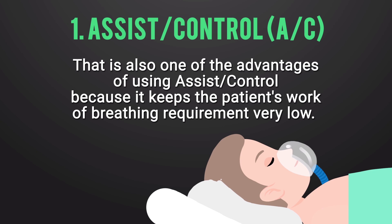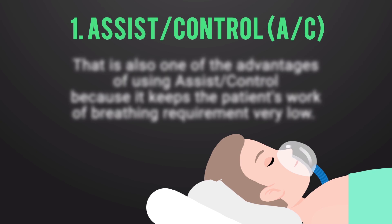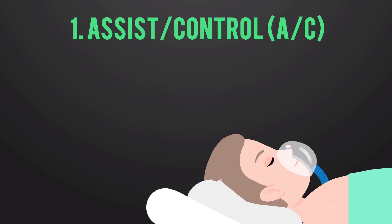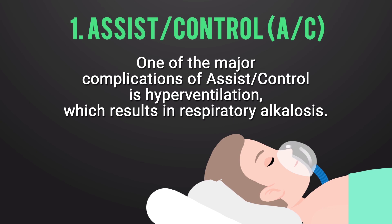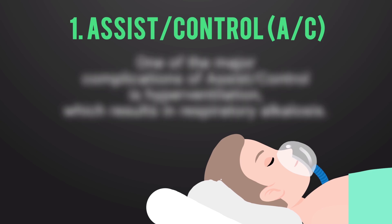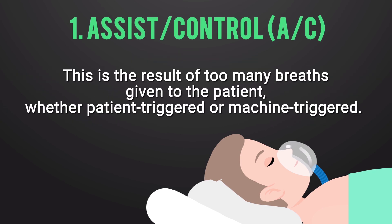One of the advantages of Assist Control is that it keeps the patient's work of breathing very low. However, one of the major complications of Assist Control is hyperventilation, which results in respiratory alkalosis. This is the result of too many breaths being given to the patient, whether they are patient-triggered or machine-triggered.